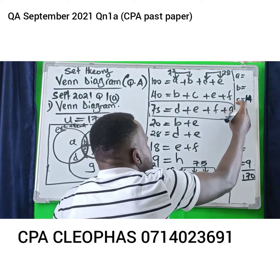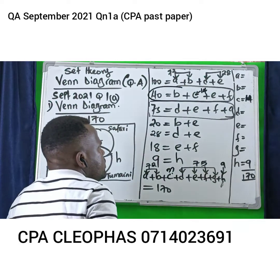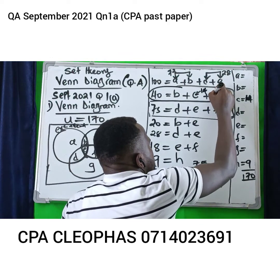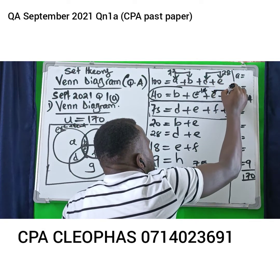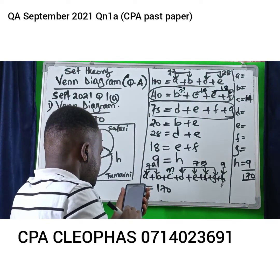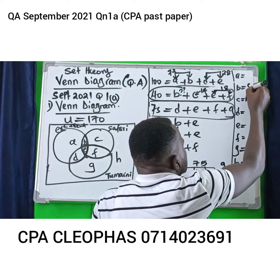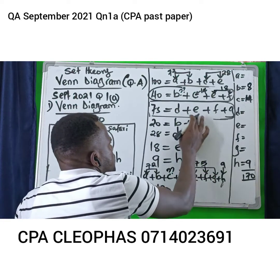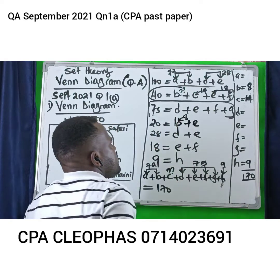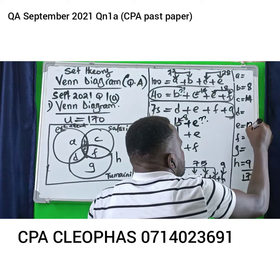Now I have C as 14. The Safari equation gives B plus C plus E plus F equals 40, and E plus F equals 18. So I can get B: 40 minus 14 minus 18. That gives B equals 8. Now from the ExoLand–Safari intersection, B plus E equals 20, and B is 8. So 20 minus 8 gives E equals 12.